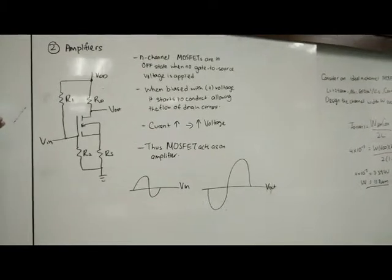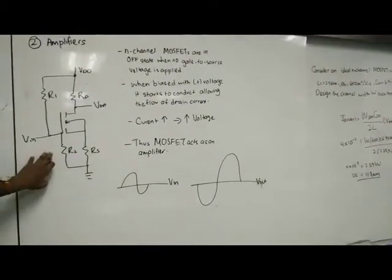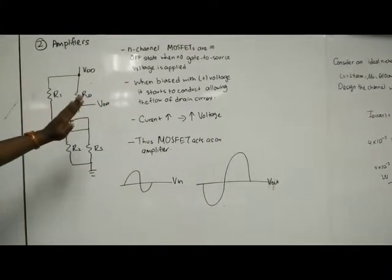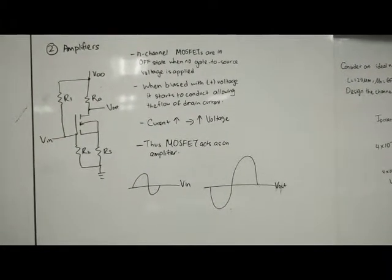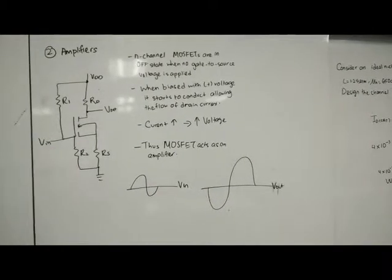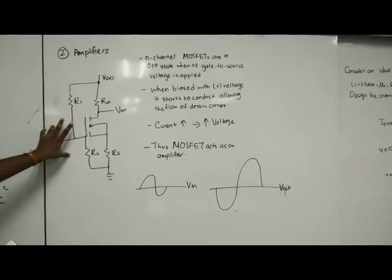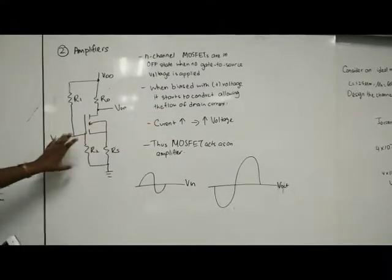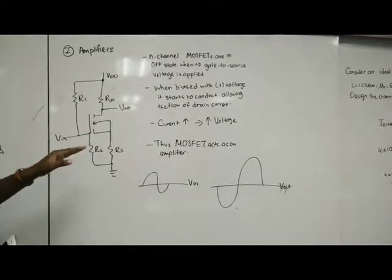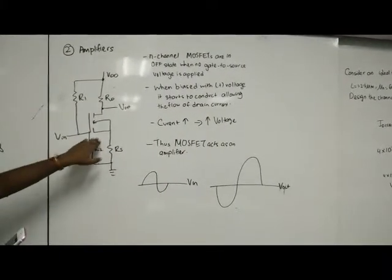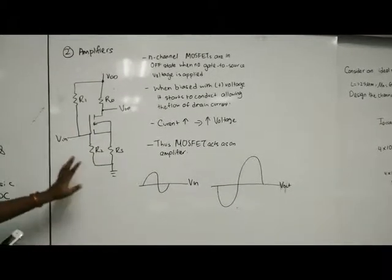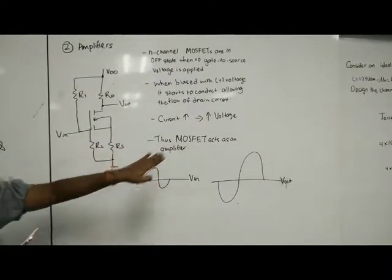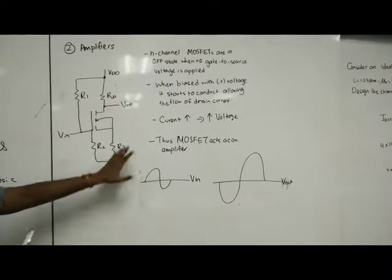Next is about the amplifier. This is an example schematic diagram showing MOSFET can act as an amplifier. N-channel MOSFET are in OFF state when no gate to source voltage is supplied. When biased with positive voltage, it starts to conduct allowing the flow of drain current.